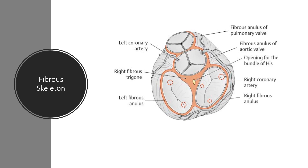The fibrous skeleton is composed of dense connective tissue. Its functions include stabilising the position of the muscle layers of the heart and the heart valves, providing support for the blood vessels and nerves of the myocardium, and providing elasticity so the heart recoils after contraction. It also aids in the distribution of forces of contraction and prevents over-expansion of the heart. The cardiac skeleton separates the chambers of the heart, provides anchoring points for cardiac muscle fibres and cardiac valves, and insulates the electrical impulses of the heart's conduction system.